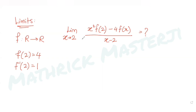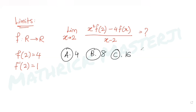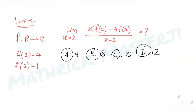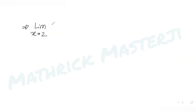The four answer choices given are 4, 8, 16, and 12. To solve this, we start with the limit as x tends to 2 of the numerator x² f(2) − 4f(x) divided by x − 2.